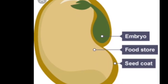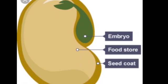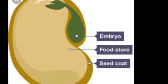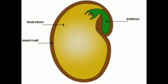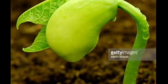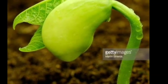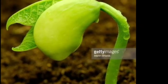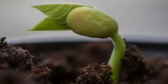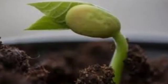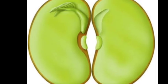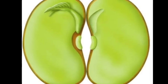Now we will talk about seed coat. Seed coat is one of the outermost parts of the seed. Now we will talk about seed leaves. One seed has cotyledons. That is the seed coat. Cotyledons can be two types: one is the dicotyledon, and two is the monocotyledon.